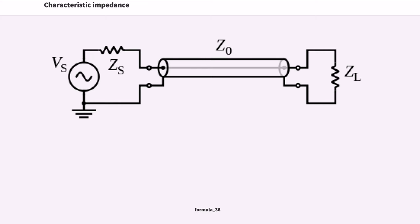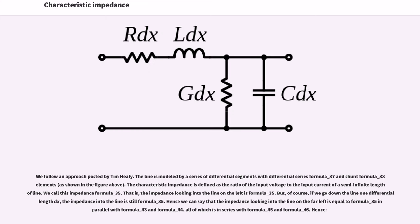Formula 36. We follow an approach posted by Tim Healy. The line is modeled by a series of differential segments with differential series Formula 37 and shunt Formula 38 elements. The characteristic impedance is defined as the ratio of the input voltage to the input current of a semi-infinite length of line. We call this impedance Formula 35. That is, the impedance looking into the line on the left is Formula 35. But of course, if we go down the line one differential length dx, the impedance into the line is still Formula 35.